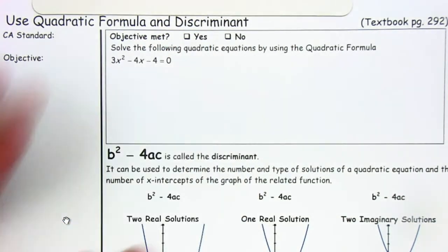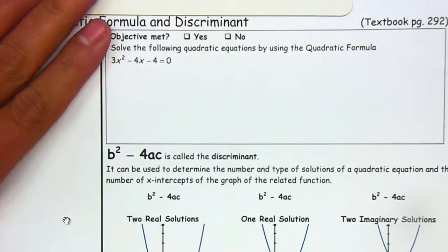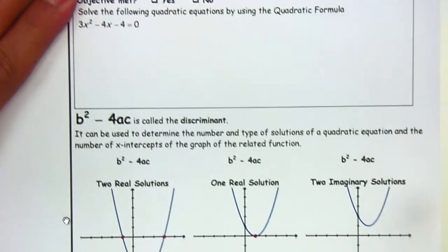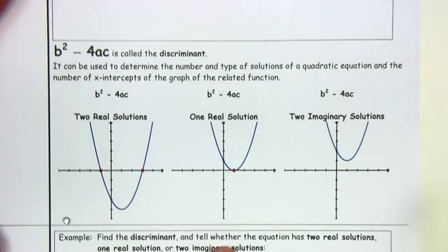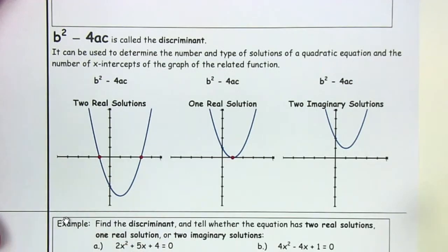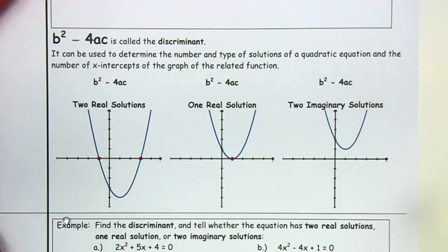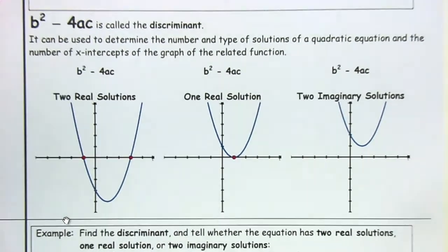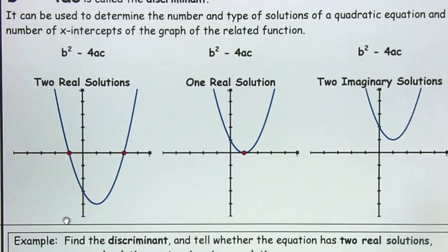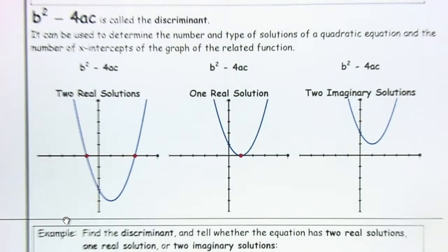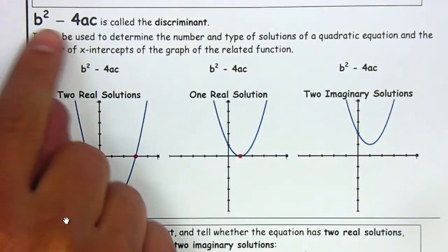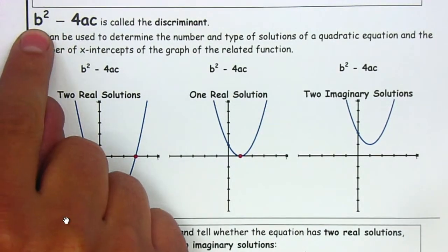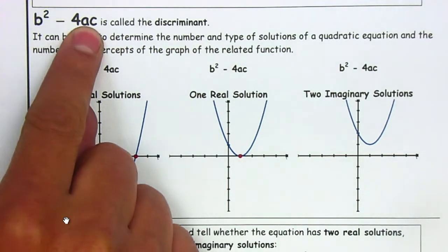First, let's look at the discriminant. Part of the quadratic formula is the discriminant. The discriminant will tell us how many solutions and the type of solutions that we are going to be having. The discriminant is b squared minus 4ac.